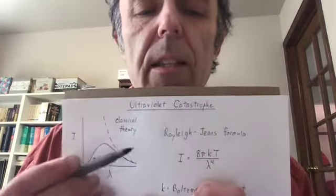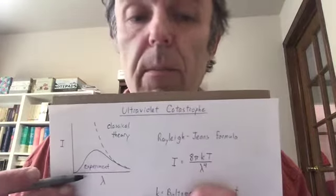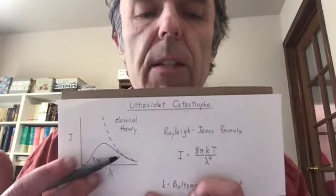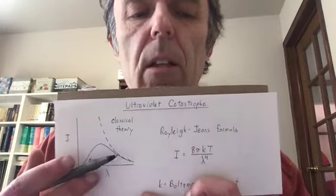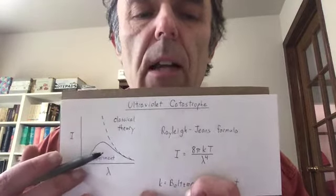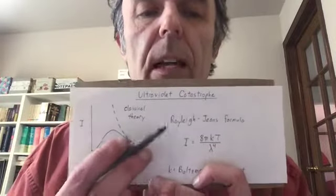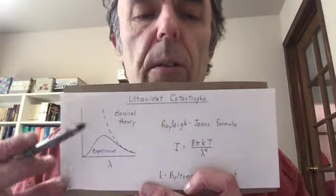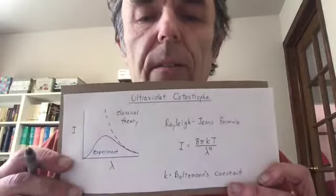The problem is that this formula does not match what's seen experimentally. Out at long wavelengths, the classical theory and experiment do match deep into the infrared. But as you go to shorter wavelengths into the visible and ultraviolet, there's this gross deviation. It's known as the ultraviolet catastrophe. Rayleigh-Jeans formula failed miserably at shorter wavelengths.